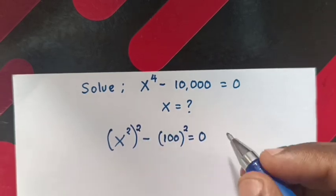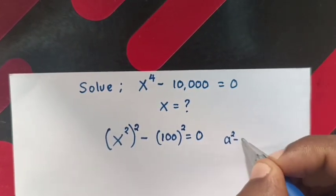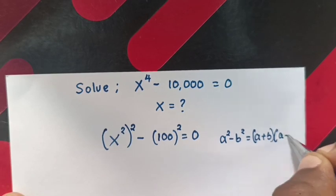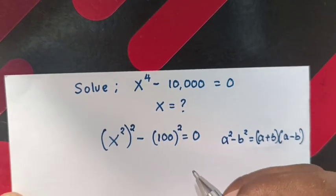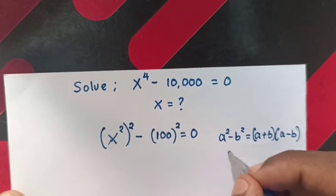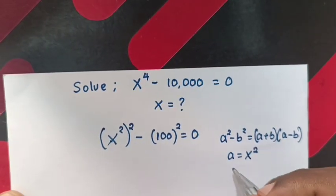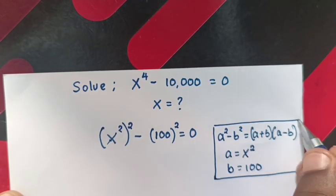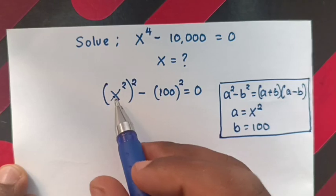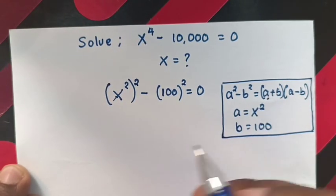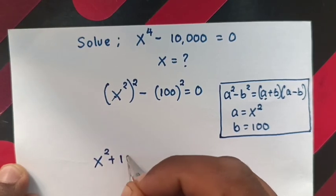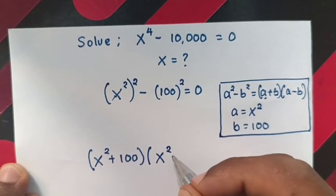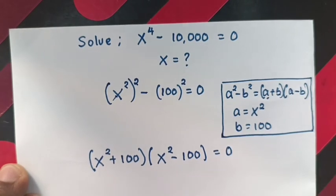This equation is in the form of a² minus b², which equals (a + b)(a − b). Here, a is x² and b is 100. So this equation becomes (x² + 100) times (x² − 100) equals 0.